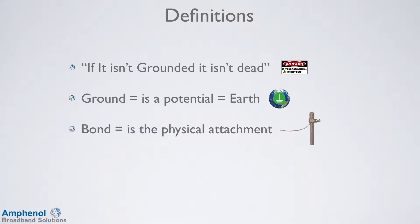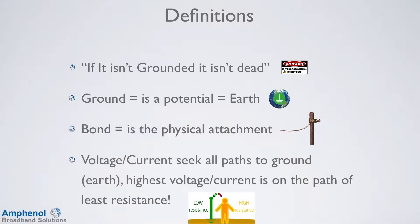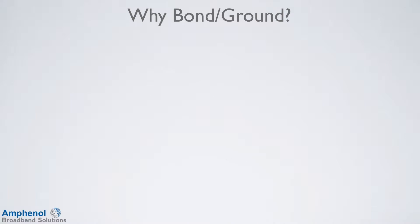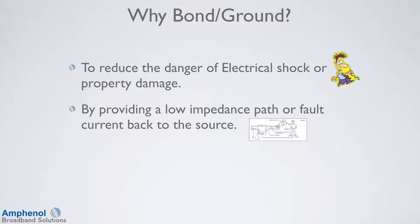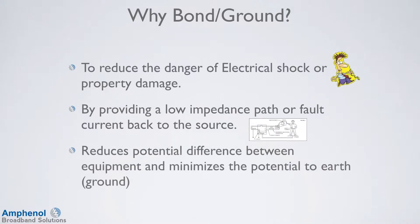In cable TV plant construction, we still put in grounds, but only on rare occasions when working on residential properties. These circumstances will be shown later. We've always been told that the path of least resistance carries the voltage and current — this is false. They seek all paths to ground, with the majority on the path of least resistance. We bond and ground to protect ourselves from electrical shock or damage to property and equipment. The bond and ground provides a low impedance path for fault current back to the source, reduces potential differences between equipment, and minimizes the potential to earth ground.